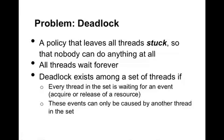Deadlock exists among a set of threads if every thread in the set is waiting for an event — the release of some resource. In the case of locks, every thread involved in a deadlock is waiting for the release of a lock held by another thread. Crucially, the events they're waiting on can only be caused by another thread in the set, but that other thread is also waiting, so it can never make the event happen. A classic case is when one thread waits on a lock that another thread holds, and that other thread is itself waiting on a lock and therefore cannot release it.